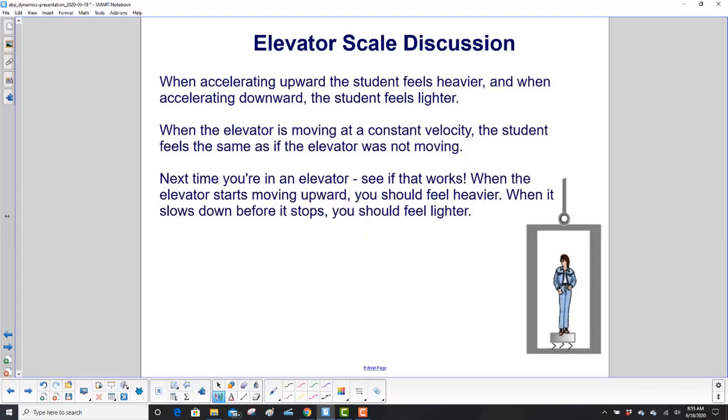When accelerating upward the student feels heavier, because the normal force tells you how much the student thinks the weight is. And when accelerating downward the student feels lighter. When the elevator is moving at a constant velocity, the student feels the same as if the elevator was not moving. So if you're going from like the first floor to the hundredth floor at the Empire State Building, somewhere in between there you're going at a constant speed. You really can't tell if you're moving or not. Well I guess you can because you can hear the noise and everything else. But if it was a perfectly quiet elevator you wouldn't know the difference.